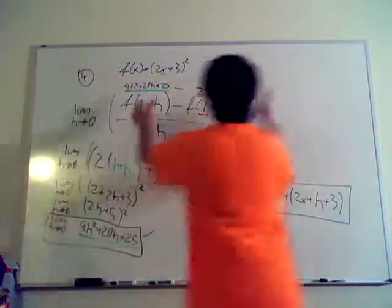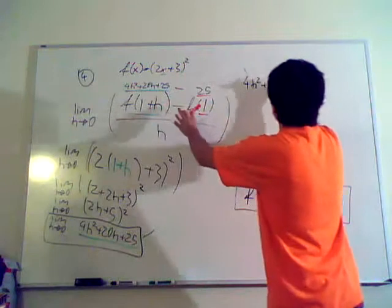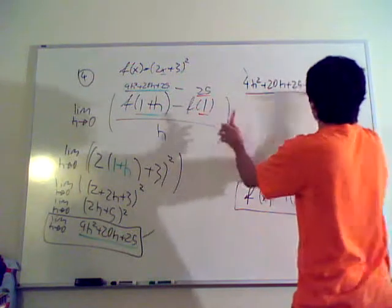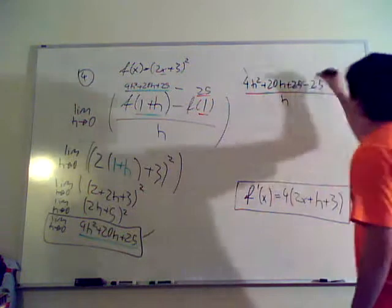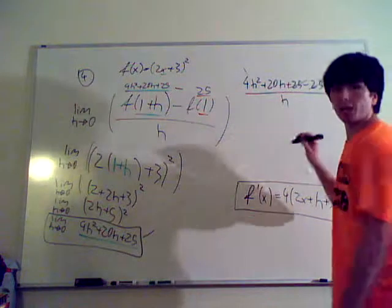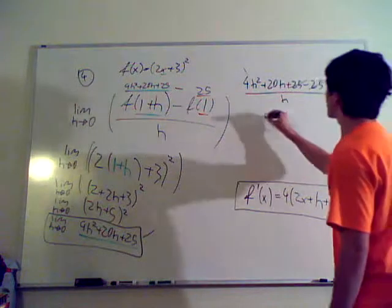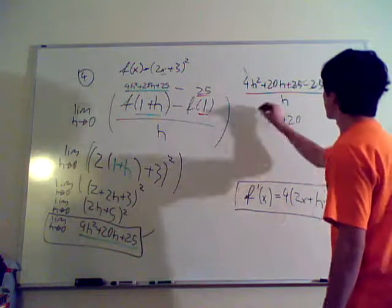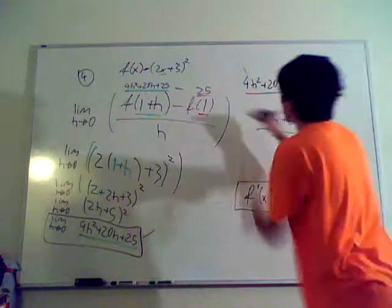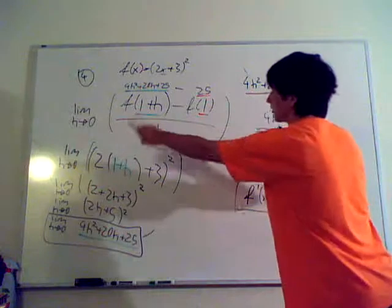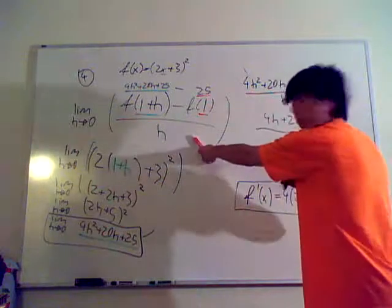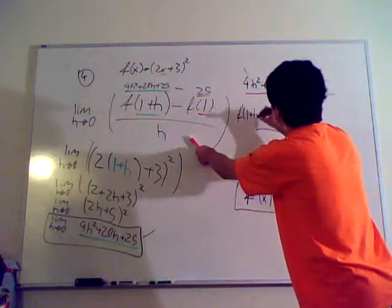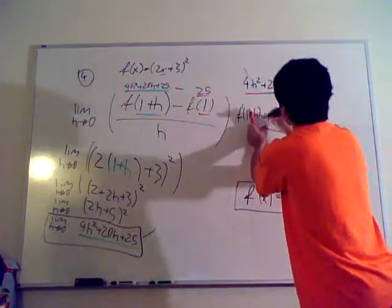So, 4h squared, plus 20h, plus 25, minus 25, over h. Plus 25, minus 25, cancels. 4h squared, plus 20h, over h, is the same thing as 4h, plus 20. Because h is cancelled, right? That is your answer. That is the, that is the limit of when h approaches to 0 of this function, which is f prime of 1 plus h equals 2.